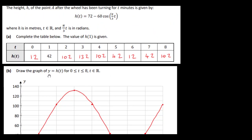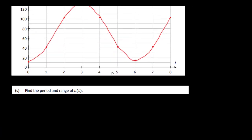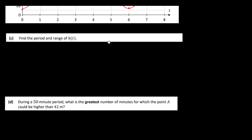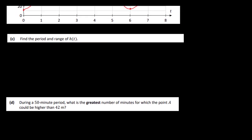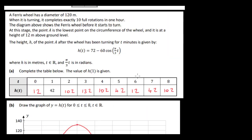Next, we find the period and range of the function h(t) = 72 − 60 cos(π/3 · t). You can spot both from the graph, and also from the story: 10 full rotations in one hour means one rotation every 6 minutes — that's the period. To confirm algebraically, take 2π divided by the coefficient of t, which is π/3: 2π ÷ (π/3) = 2π × (3/π) = 6. So the period is 6 minutes.